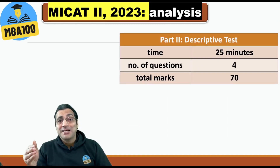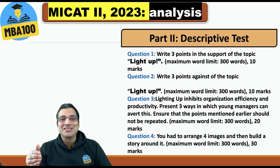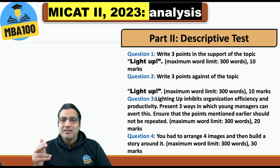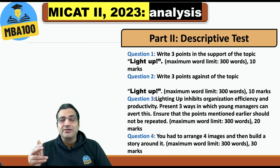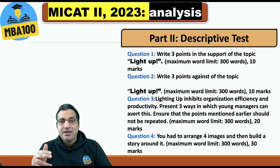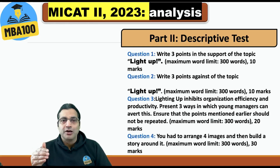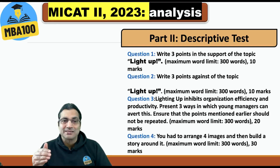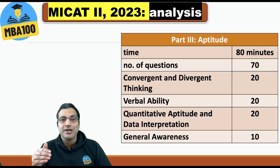Part 2 is the descriptive test — 4 questions to be done in 25 minutes, total marks 70, and this time the topic was 'Light Up.' In question 1, write 3 points in favor. In question 2, write 3 points against the topic. In question 3, write on how lighting up inhibits organizational efficiency and productivity, and present 3 ways young managers can avert this. In question 4, arrange 4 images and build a story around them.